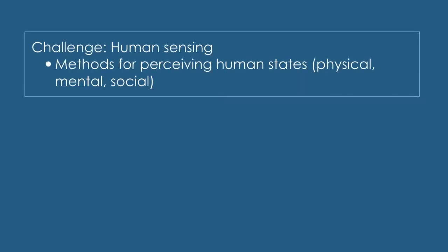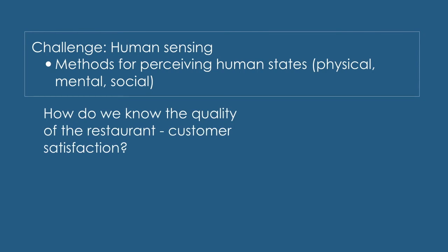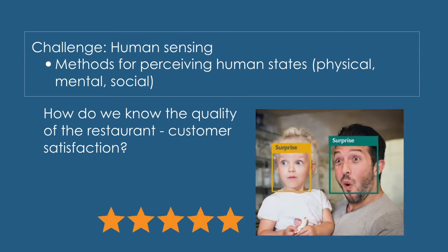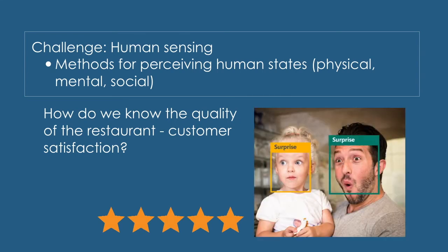This is our first challenge: human sensing. To build a human-centered AI system, we need to know more about humans. In this case, we sense the patterns of human movement. Let's look at another example. How do we know the quality of the restaurant? Here, we need to sense the mental states. We can simply ask them to tell us how happy they are, or we can use some sort of affective computing techniques to infer human emotions automatically.